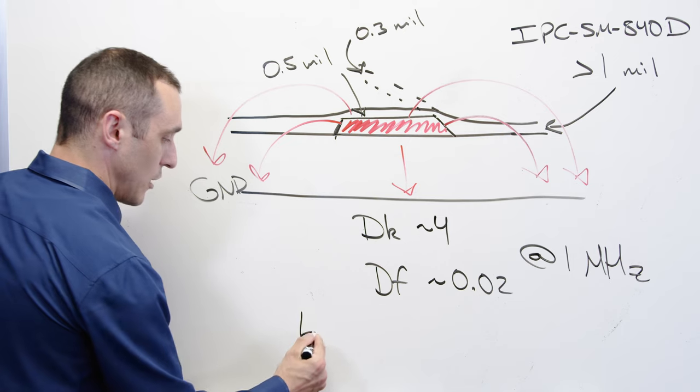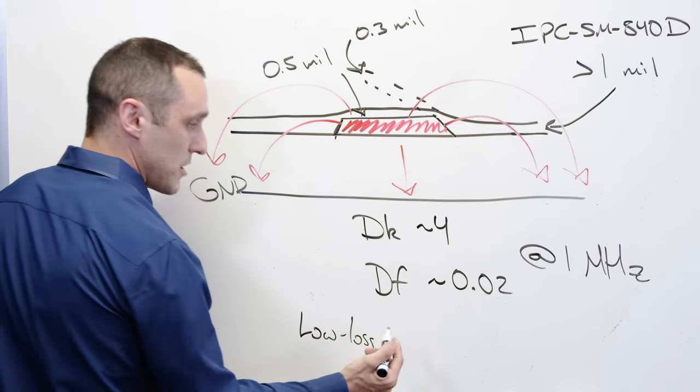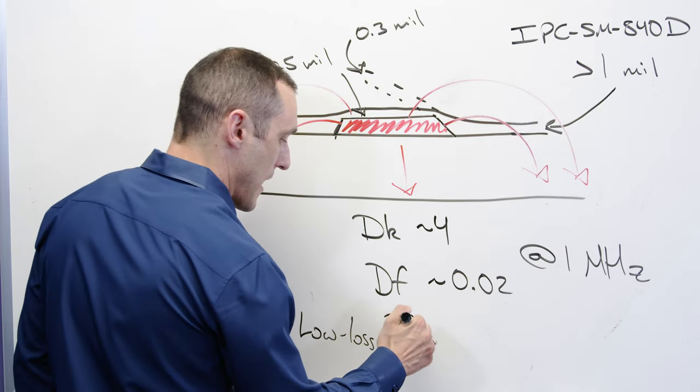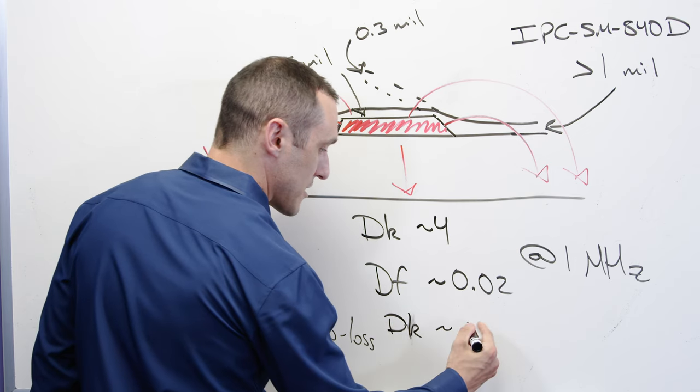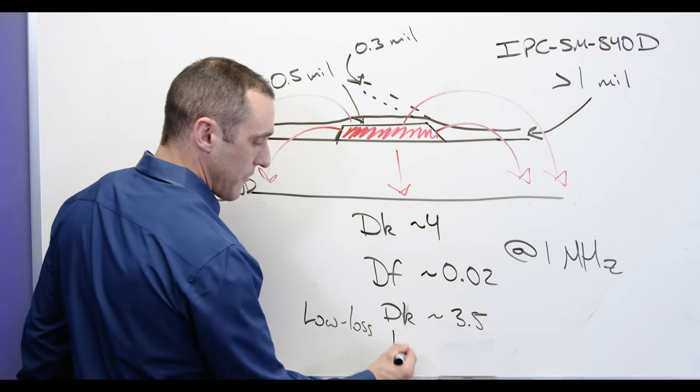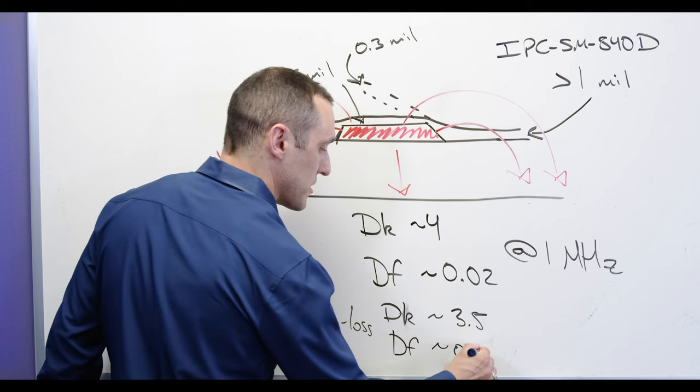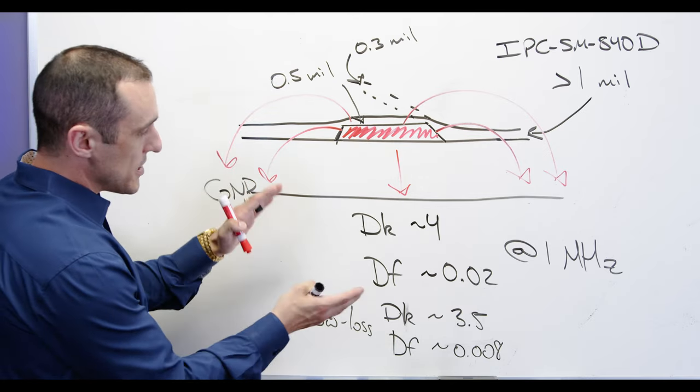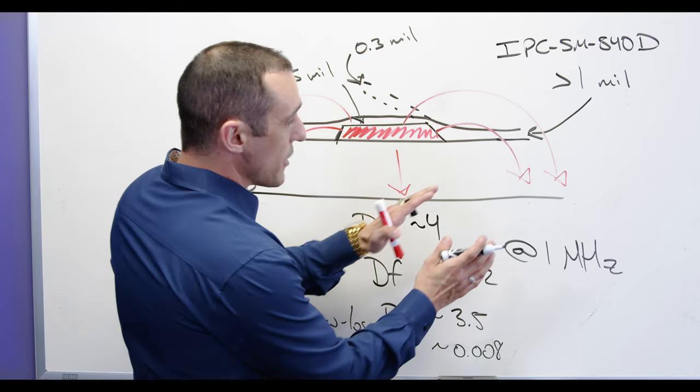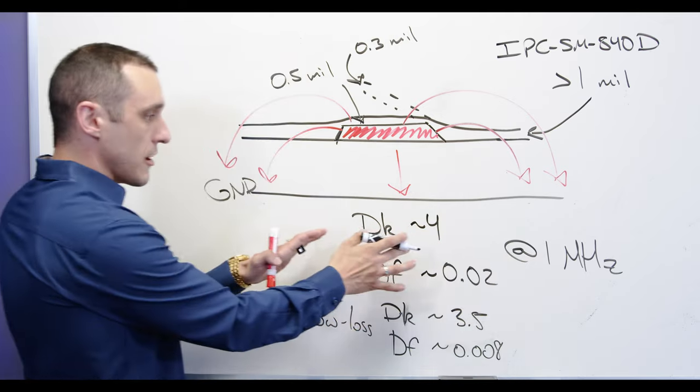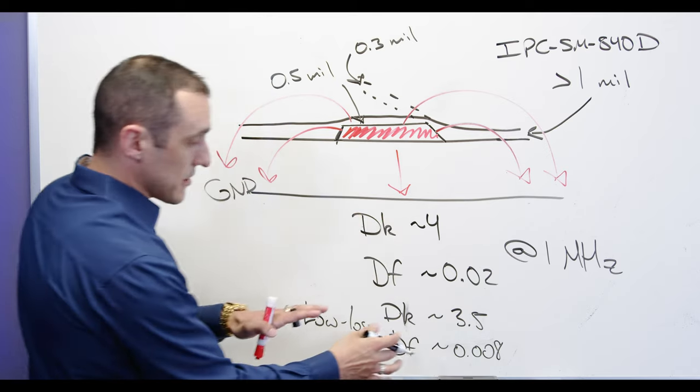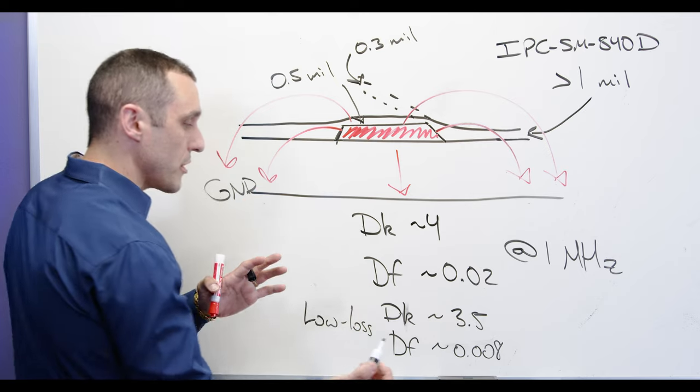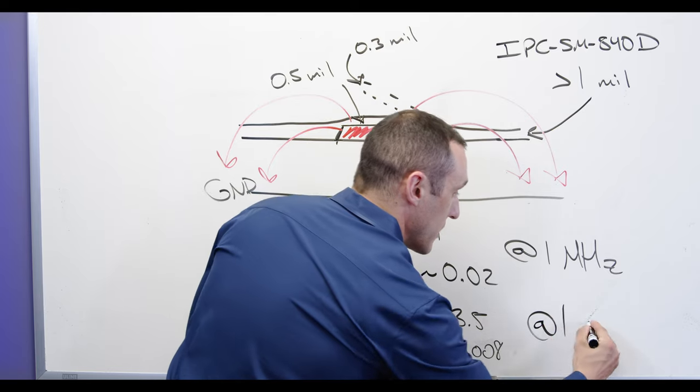They also looked at a low loss version and the low loss version I think is closer to what the question is looking at. In that low loss solder mask material they have Dk value of approximately 3.5 and then a Df value of approximately 0.008 so about half of this. This is the range of different values that you could see in different commercially available solder masks and they could even be tested at different frequencies. In this low loss version that would be intended for a high speed PCB or an RF PCB operating at lower frequencies these were tested at 1 gigahertz.